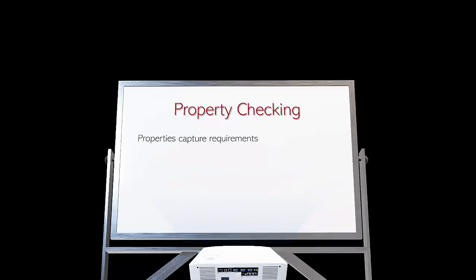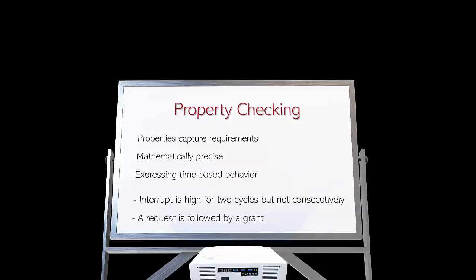Properties capture requirements, they're mathematically precise, and they express time-based behavior. For example, if you want to talk about an interrupt in a processor, you could say that an interrupt is high for two cycles but not consecutively. Or you could say that a request is followed by a grant. So it's very convenient to use the language of formal properties to express complex time-based behavior.